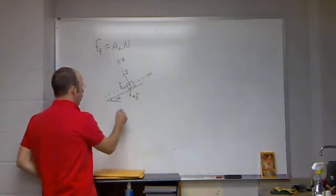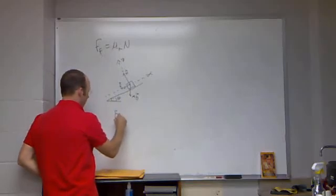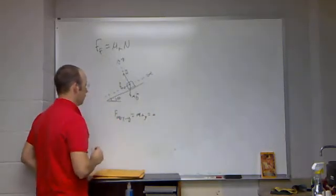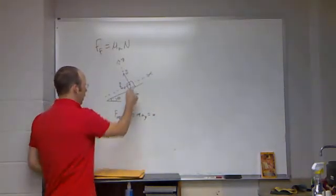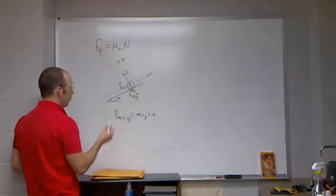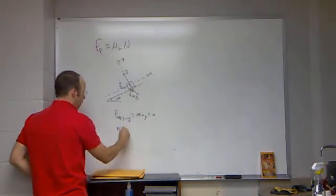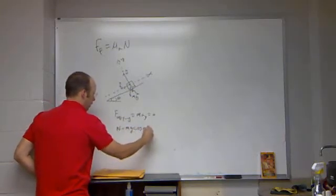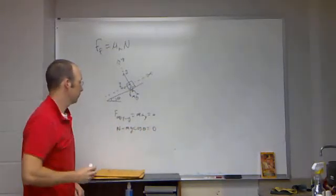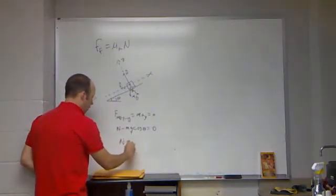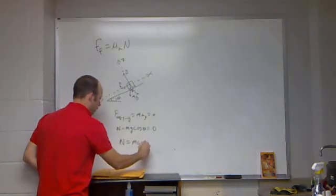So Newton's second law in the y-direction, F net y equals m a y equals zero. So what force do I have? Well, this is that same trick I had before, that same theta. In the y-direction, I have n minus mg cosine theta equals zero. And so I can solve for n. n equals mg cosine theta.